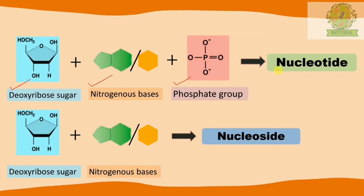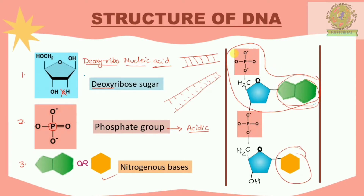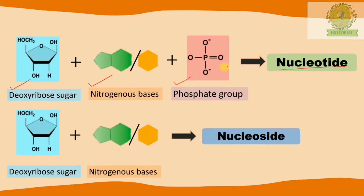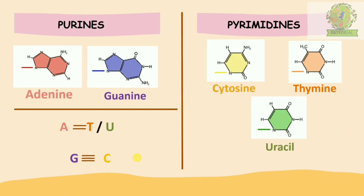When the three components — deoxyribose sugar, nitrogenous bases, and phosphate group — come together, they form a nucleotide. This single repeating unit is known as a nucleotide. If I remove the phosphate group from the nucleotide, I am left with only deoxyribose sugar and nitrogenous bases — that combination is called a nucleoside.